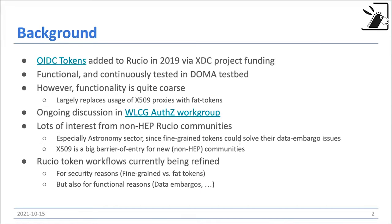Just to give a slight nostalgic background: we added OIDC token support already in 2019. This was done via funding from a European project called XDC. Since then we have been essentially testing this functionality continuously on the DOMA testbed. All this functionality works, but it has only quite coarse functionality. What I mean with coarse is that everywhere we used X.509 proxies before, we largely replaced this with FAT tokens.